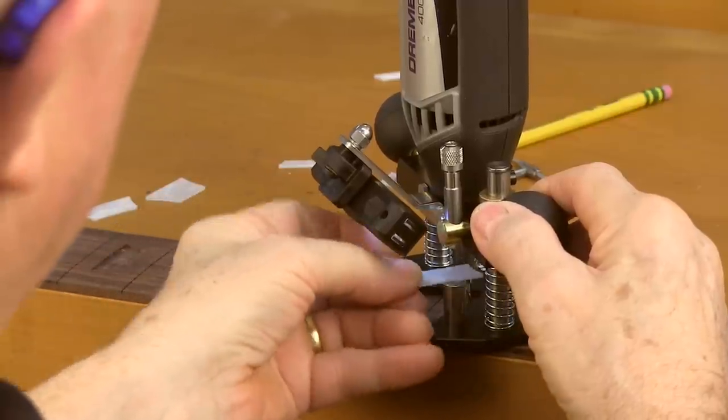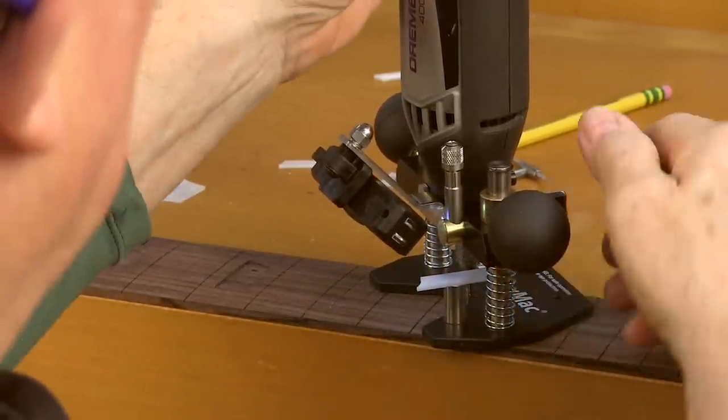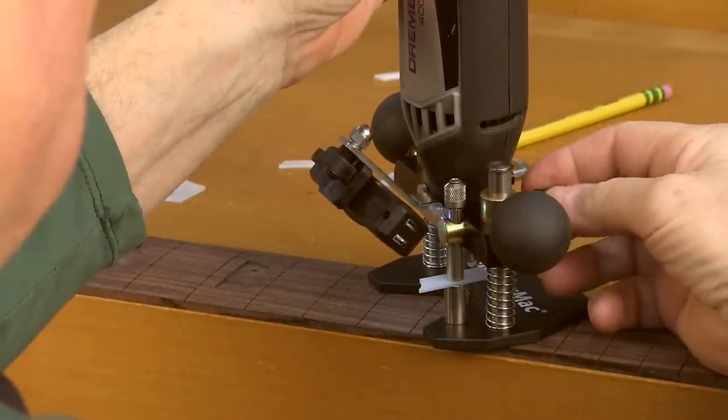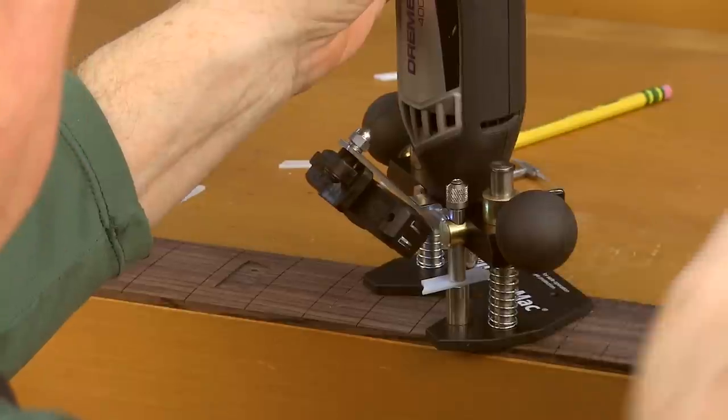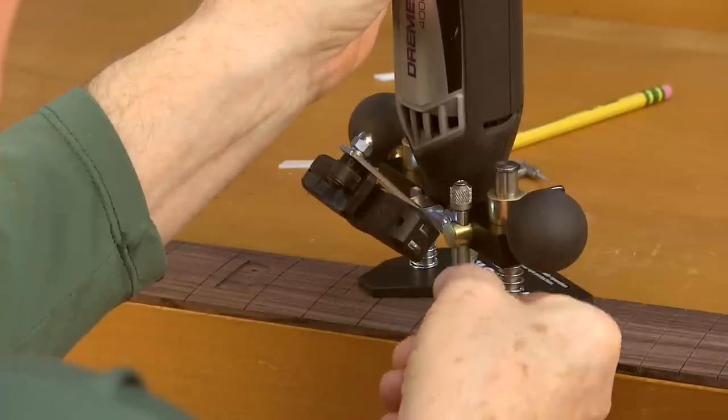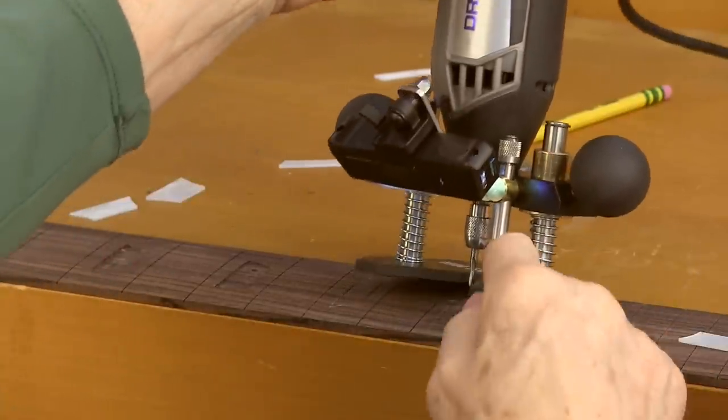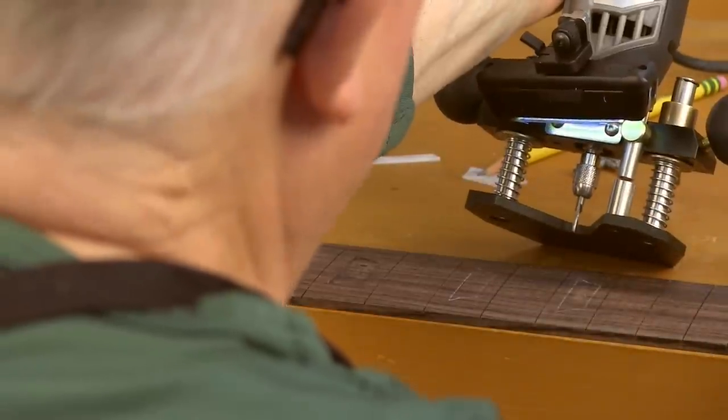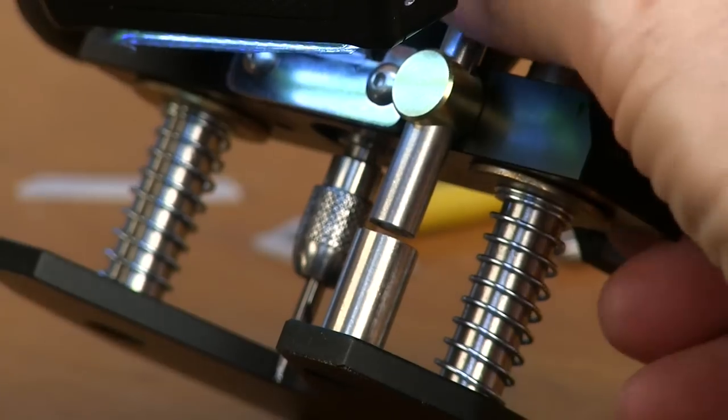Set your piece of pearl inlay in there and loosen this knob. The plunger comes down and hits the pearl, and that's the measurement that you'll cut now - the thickness of the pearl. Let's say you're in really hard wood that you don't want to plunge that deep at once.